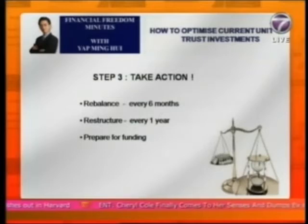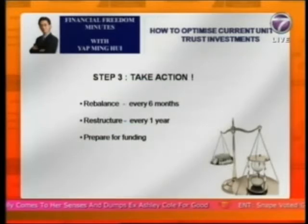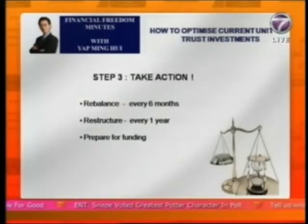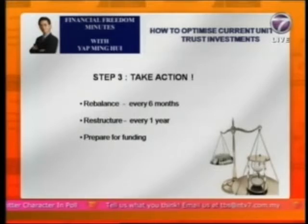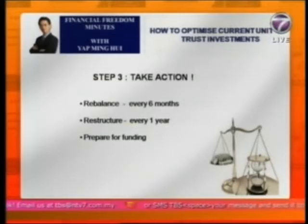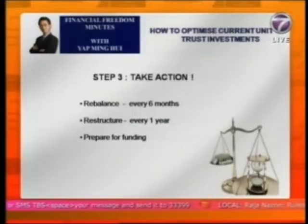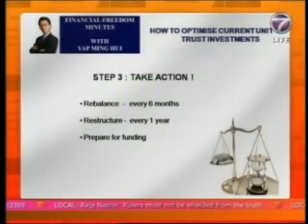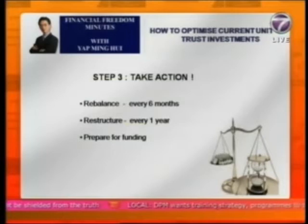The third step I want to talk about here is to take action. While you do reporting, filing, and monitoring, you're supposed to take some action. The first action is to do rebalancing, and I would suggest doing rebalancing every six months. Rebalancing means that if you have invested in five funds and one fund is making a good profit, I would suggest you take some profit — sell some units — and buy into some of the other funds inside your portfolio which are selling at a lower price. That way you always sell high and buy low, which is also buy low, sell high.